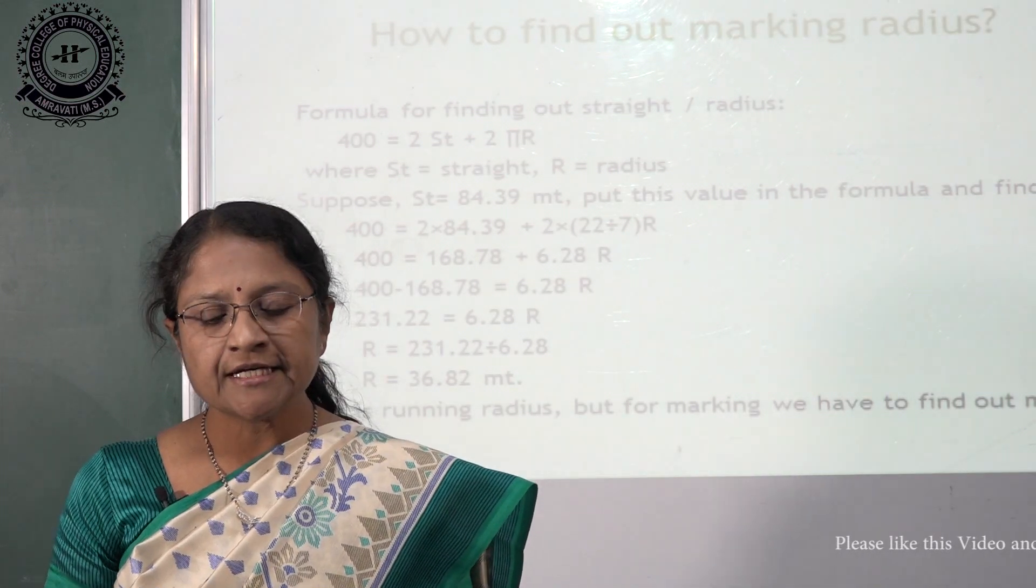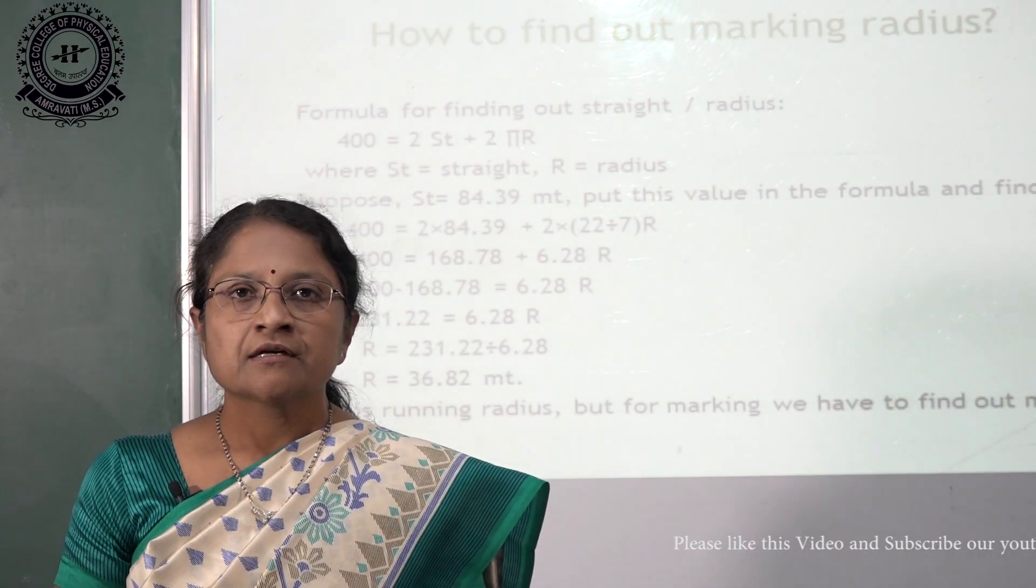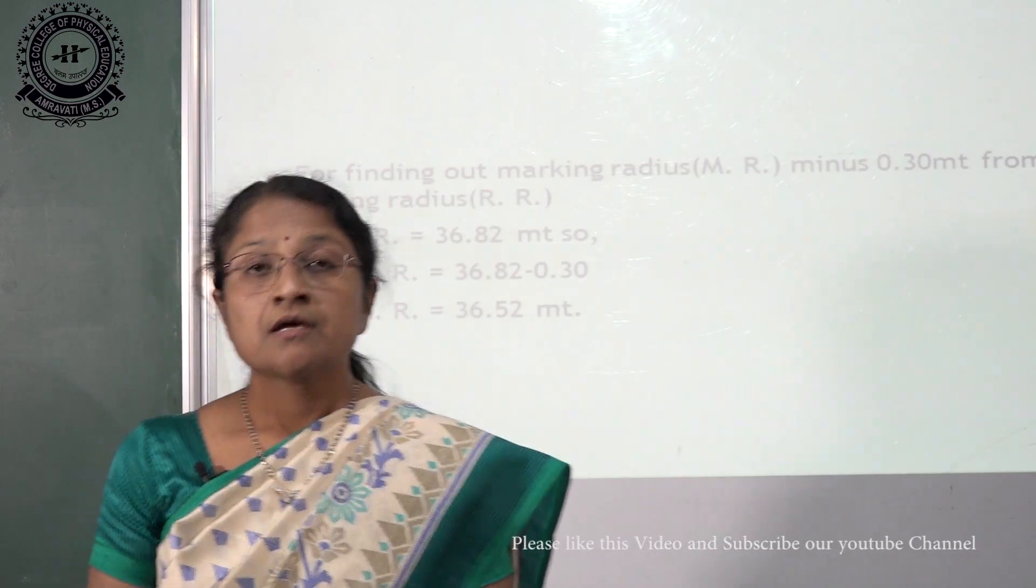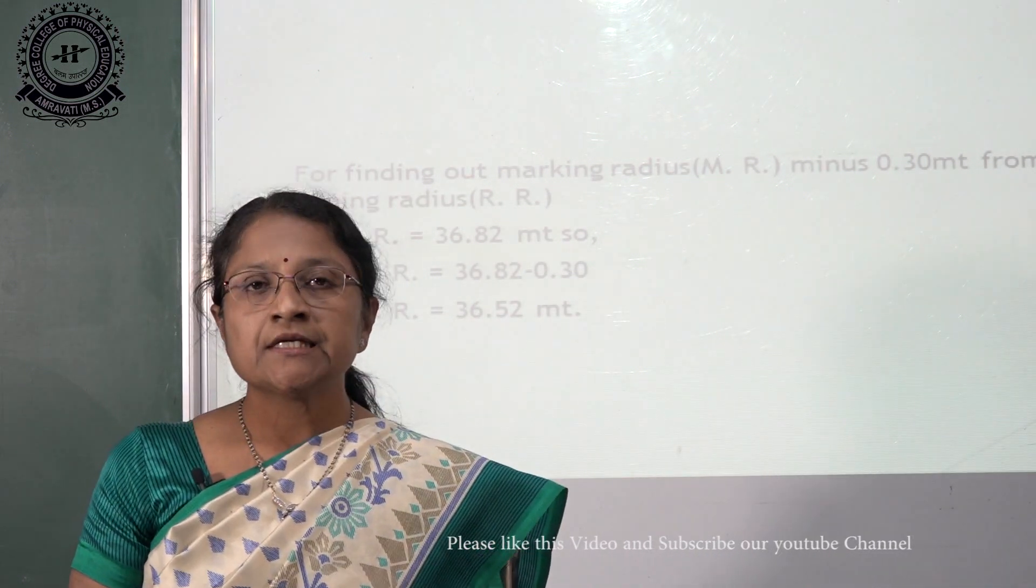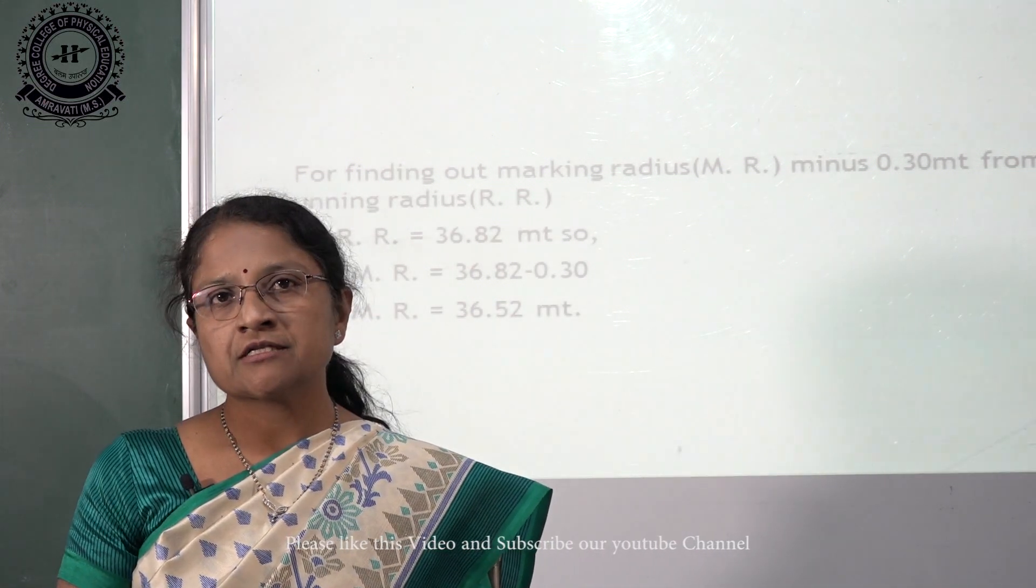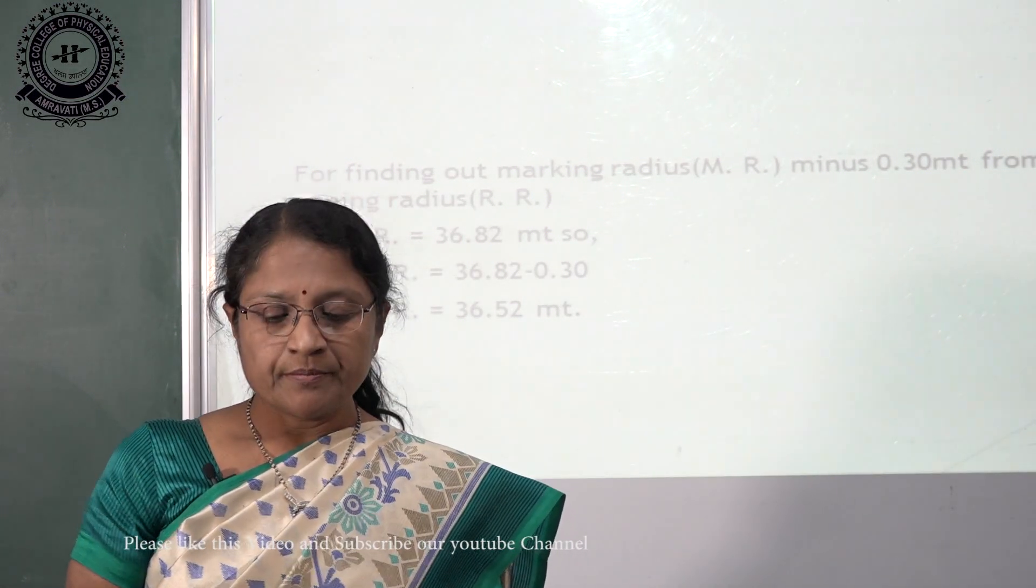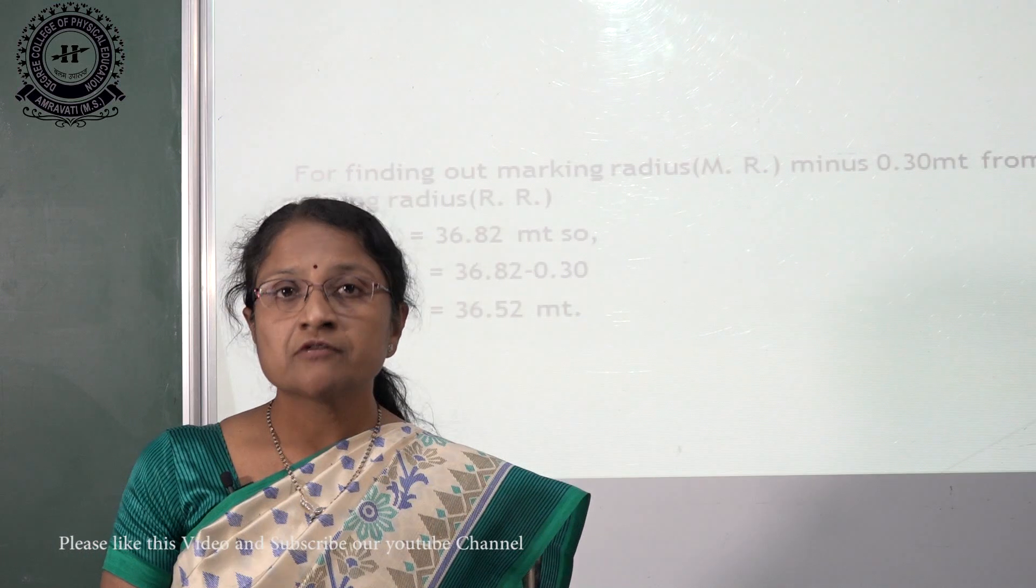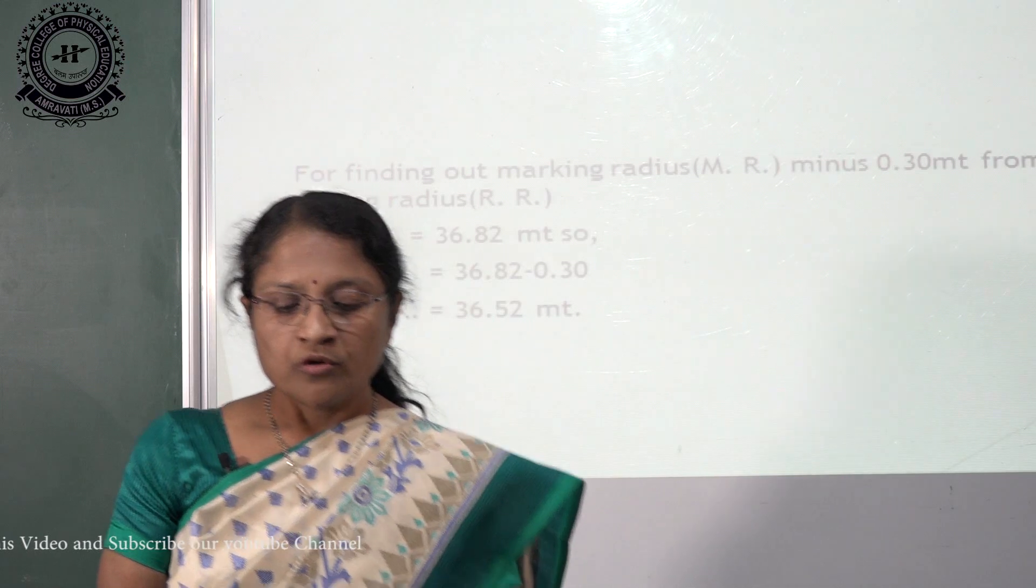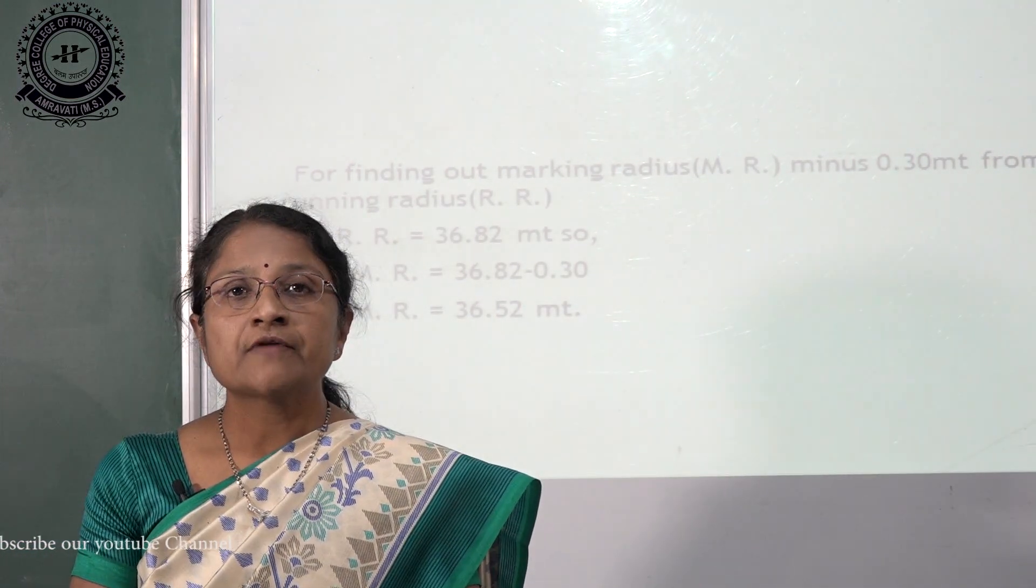Now this radius we call running radius. For marking, we have to find out marking radius. For finding out marking radius, minus 0.30 meter from running radius. So put it in the formula: marking radius equals running radius minus 0.30. So marking radius equals 36.52 meters.